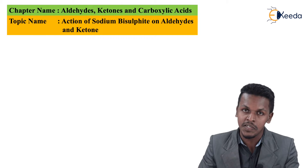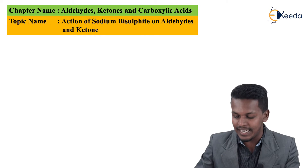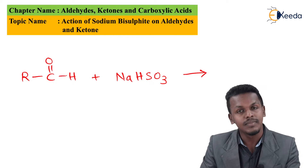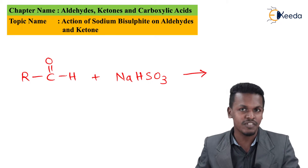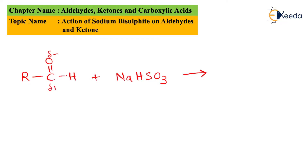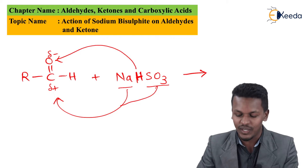Let's talk about the action of sodium bisulfite on aldehyde first. For the general reaction, suppose we have an aldehyde written as R-C(=O)-H, and it reacts with sodium bisulfite, NaHSO3. The oxygen is electronegative while the carbon is electropositive. The hydrogen from sodium bisulfite gets attached to the oxygen, while the rest of the group, SO3Na, gets attached to the carbon atom.